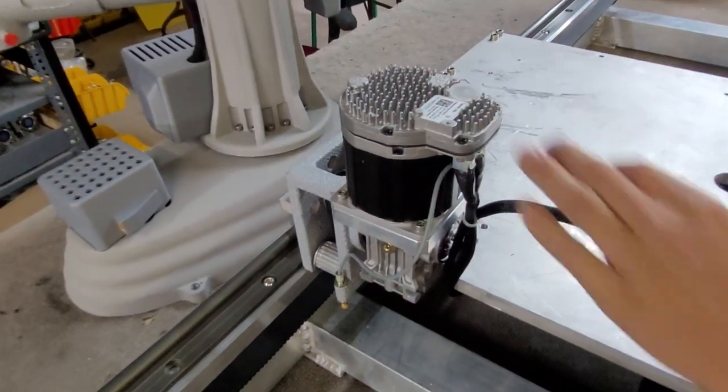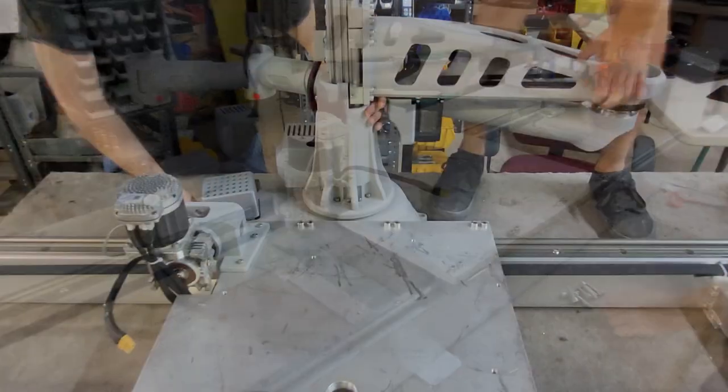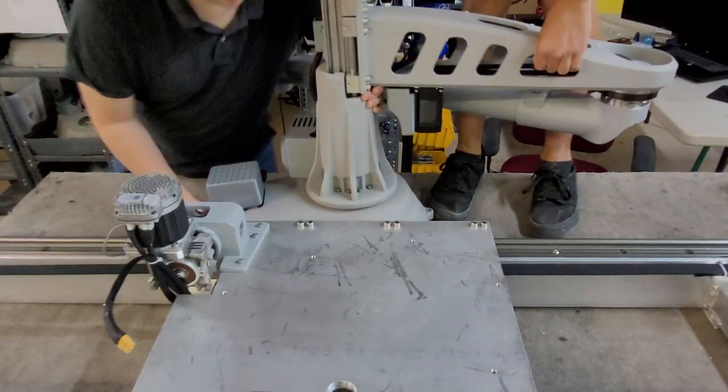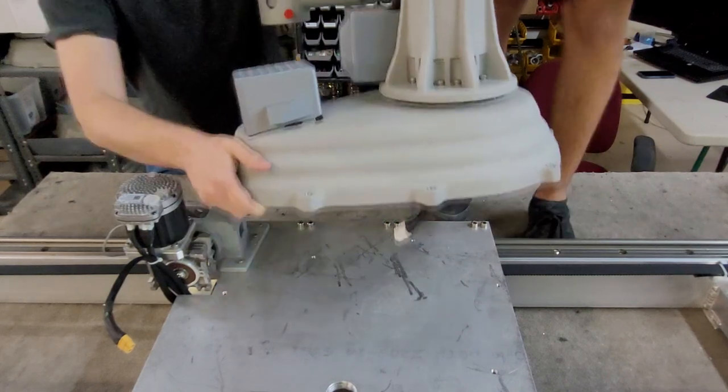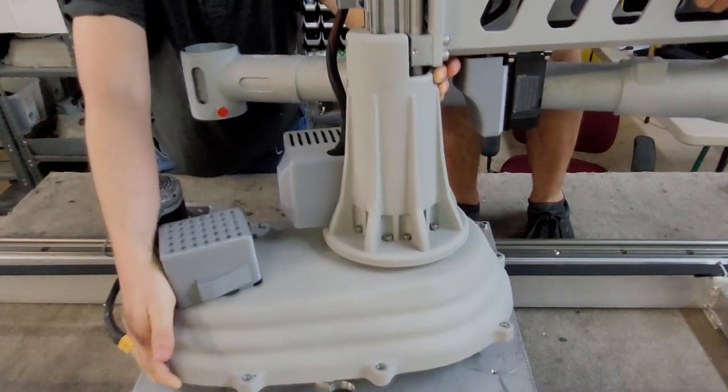The next step requires two people. We are going to move the SCARA printer onto the rail system. The printer must be put onto the plate in this orientation.